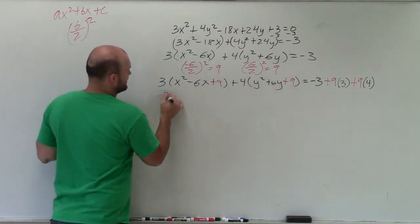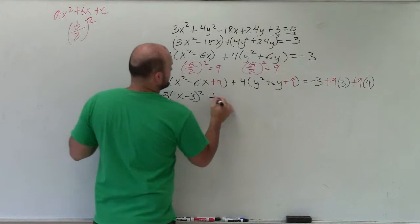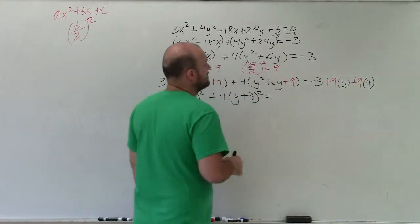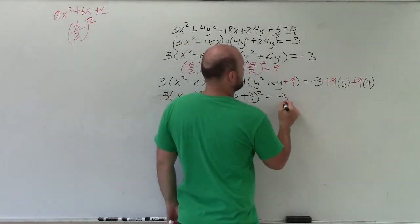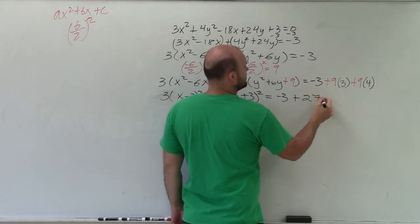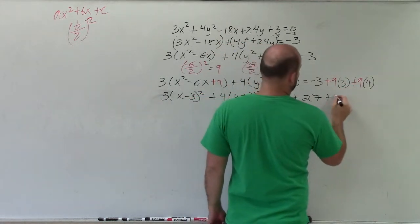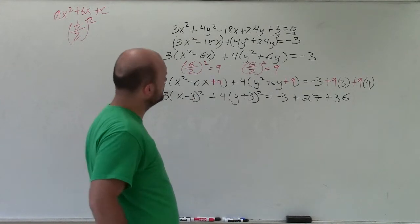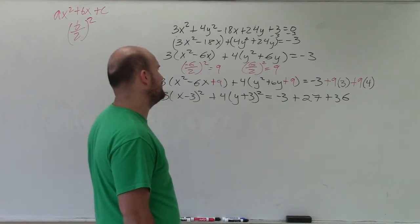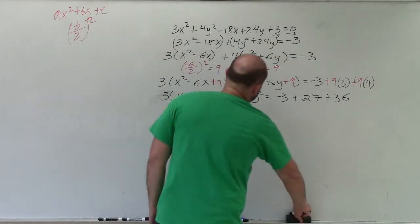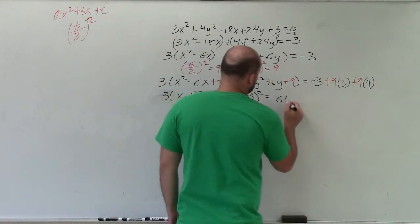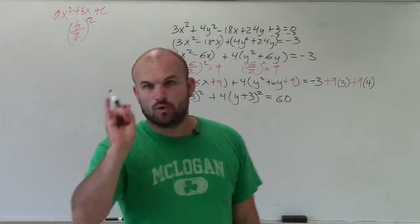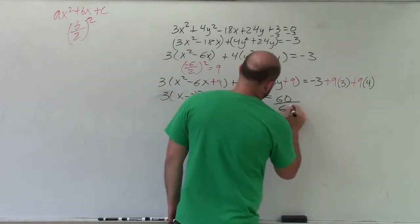All right. So by factoring this down, I get 3 times x minus 3 squared plus 4 times y plus 3 squared equals, now I just need to combine these. So really it's negative 3 plus 27 plus 36. So that's going to be 60. So when I add these all up, I get 60. Now remember, the equation of the ellipse is equal to 1. So therefore, I need to get that to 1. So I divide by 60.